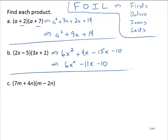Exercise C, we have (7m + 4n)(m - 2n). Again, let's use the FOIL concept. 7m times m is 7m².